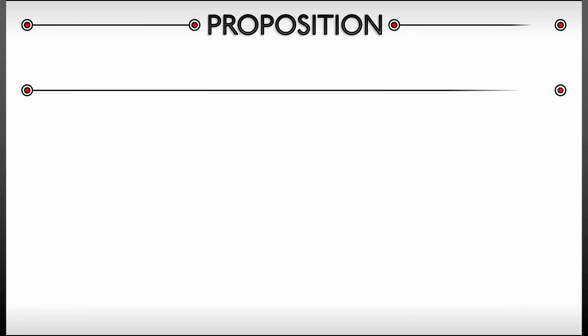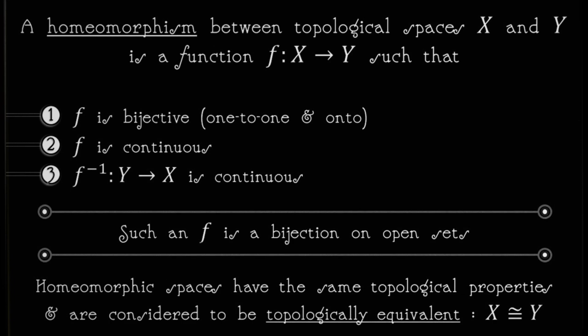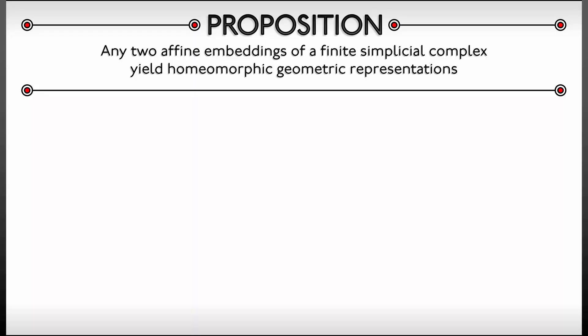Consider the following proposition. Any two affine embeddings of a finite simplicial complex are going to give you geometric representations that are homeomorphic. Now, remember what that means. These are the basic topological equivalences. It really means that they're the same space. This means that if you take a finite simplicial complex affine embedded in two different ways, it's really the same outcome. You can think of it as the same geometric representation. Is this hard to prove? No, not really.